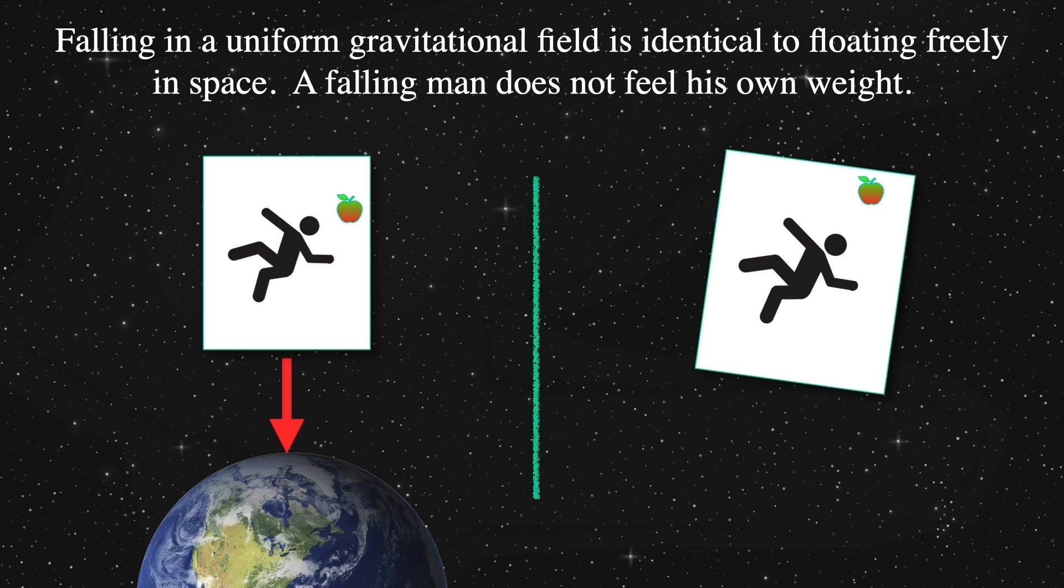These two situations, according to Einstein's equivalence principle, are exactly identical. We will call them free-falling or inertial frames, and we're going to justify that later with many examples.